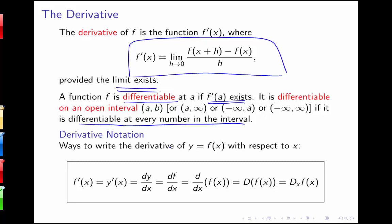We have a few different ways to notate the process of taking the derivative. If I want to take the derivative of a function y equals f of x with respect to x, I can say f prime of x, or y prime of x. I might also say dy/dx, df/dx, or d/dx of f of x. We also have D of f of x, and D subscript x of f of x. Note that d/dx is called a differentiation operator — we apply d/dx to things, like d/dx of f or d/dx of y.